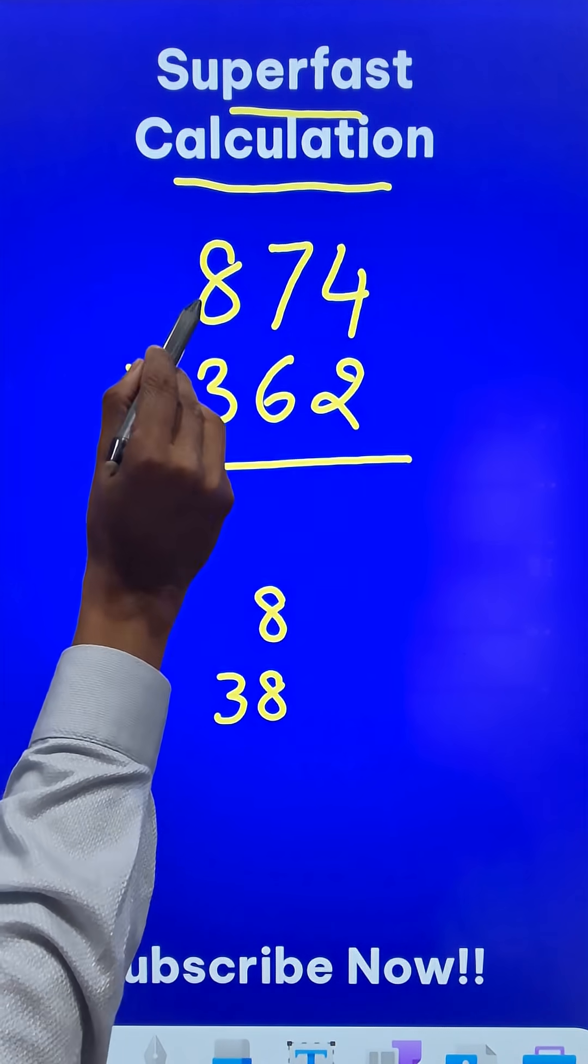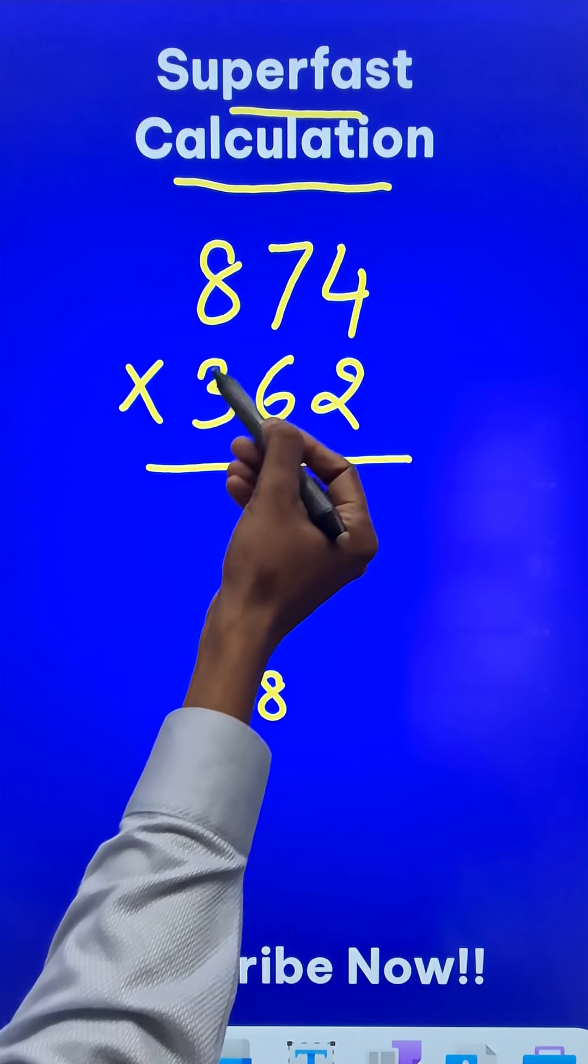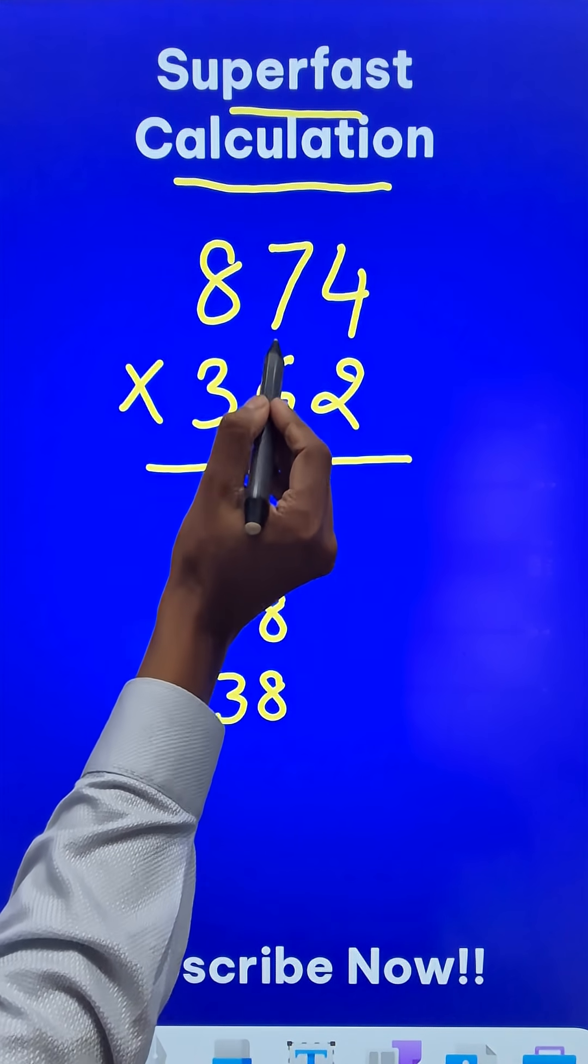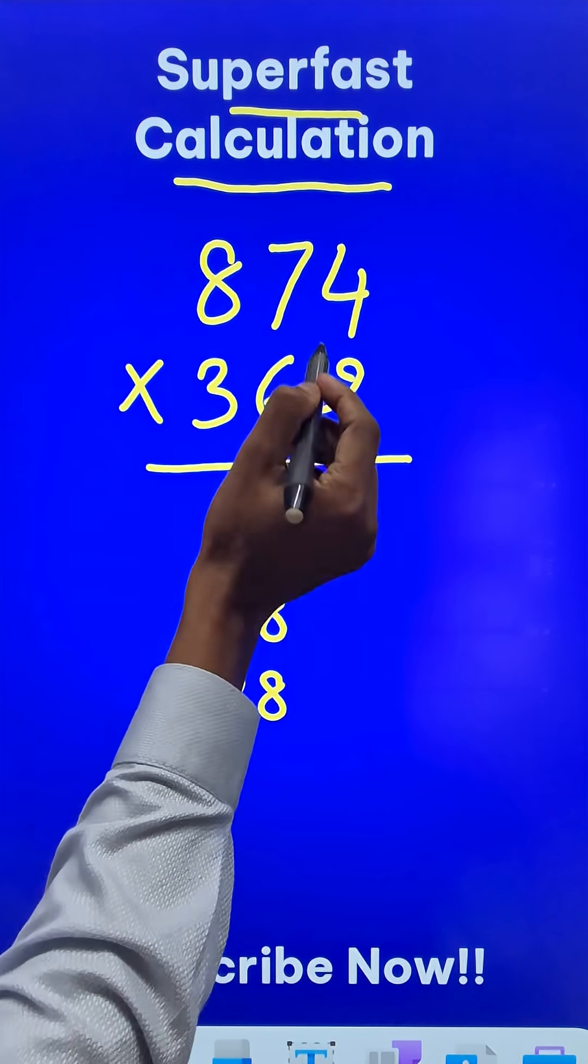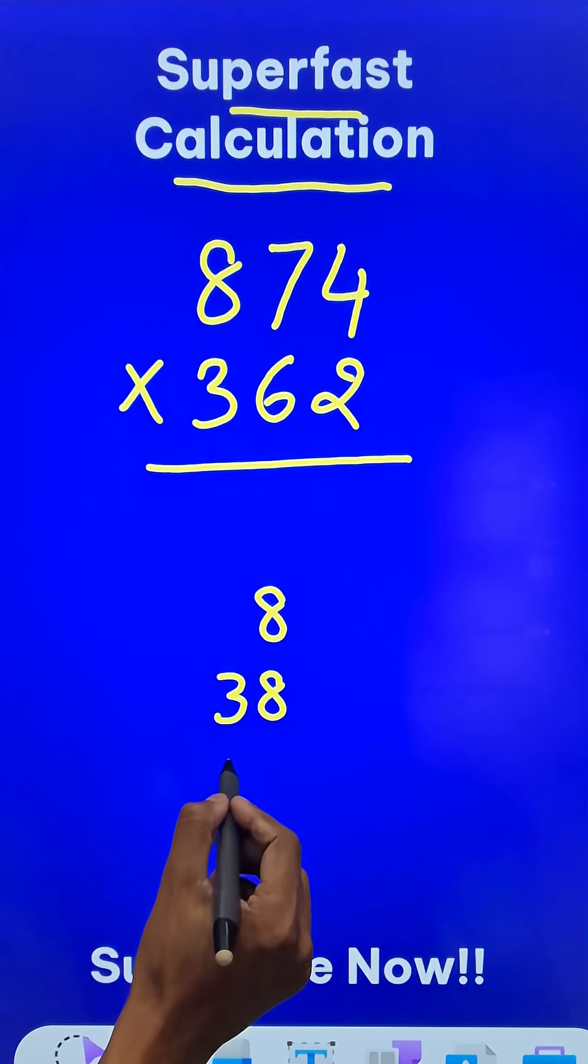Then first and last: 8 times 2 is 16, and 4 times 3 is 12. 16 plus 12 is 28. The middle digits: 7 times 6 is 42. 28 and 42 gives 70.